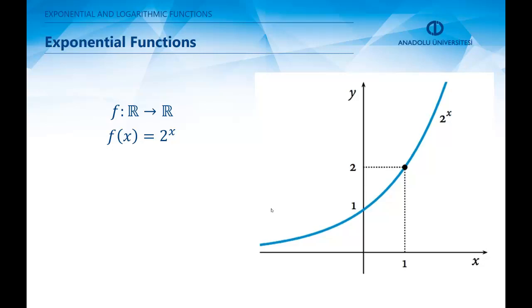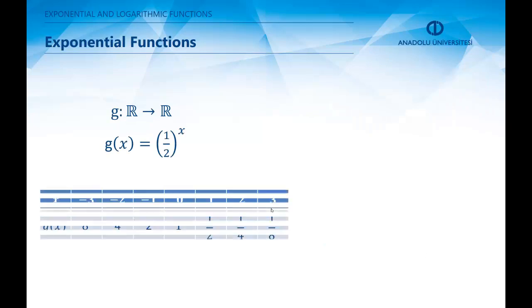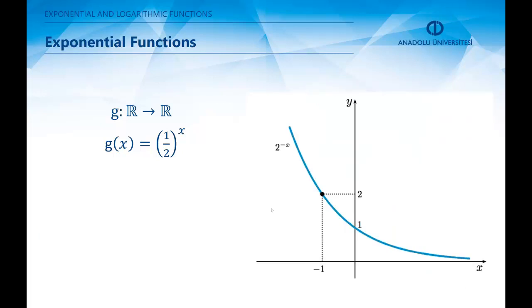If we repeat this procedure for the function g(x) = (1/2)^x, we again create this table. But this time, we see that the function's value increases very rapidly as x gets smaller in the negative direction. If we insert all these values in the Cartesian coordinate system, we see that we have a decreasing exponential function.